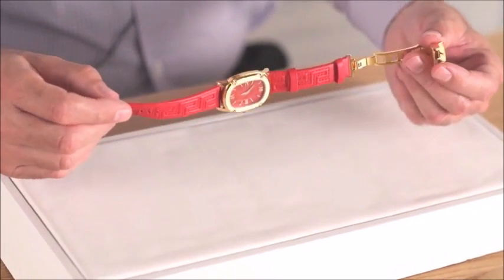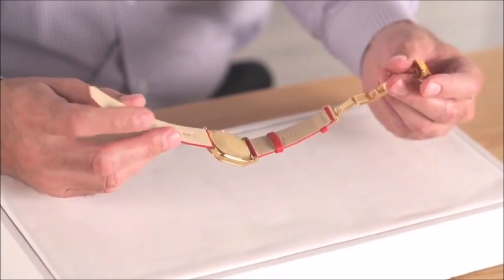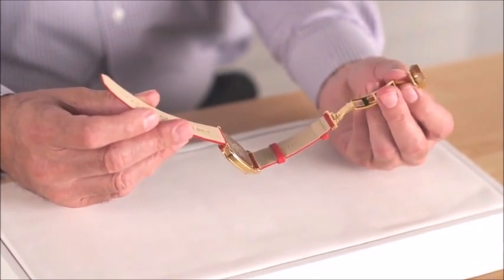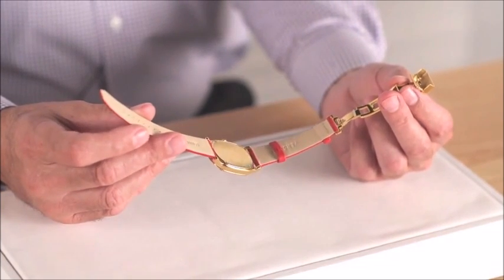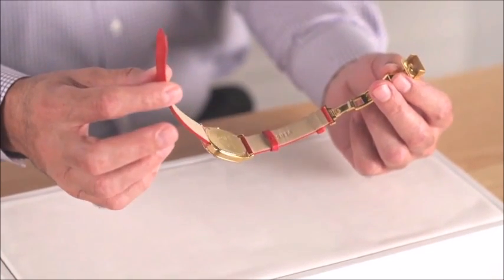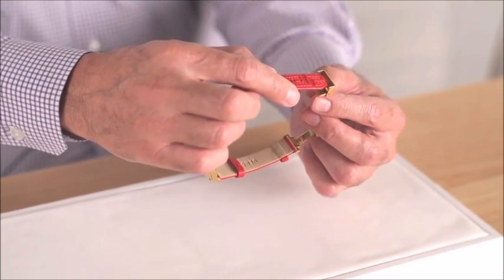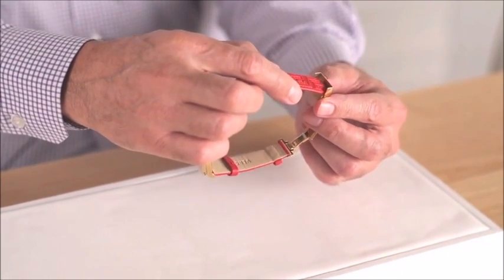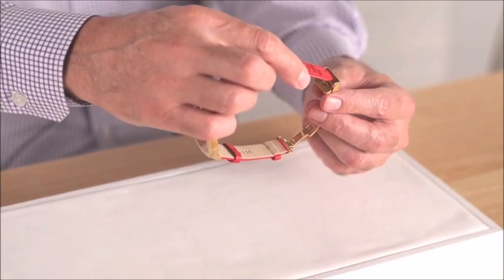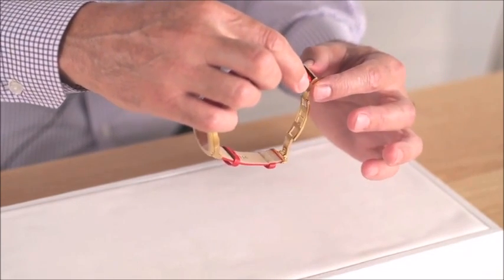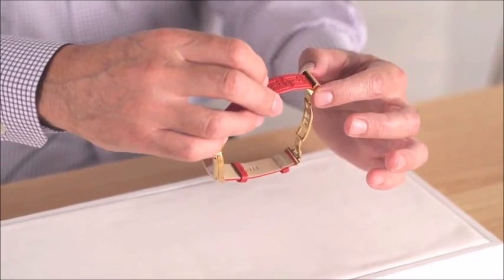I'm going to take the timepiece, flip it over as we now are going to join the two sides of the leather strap. Take this side that does not have the buckle on it, bring it over, slip it into the buckle. And as you see, the mouth of the buckle will automatically open up and slide in the leather strap.